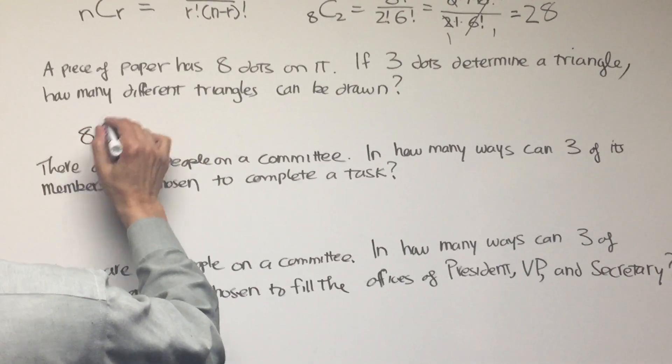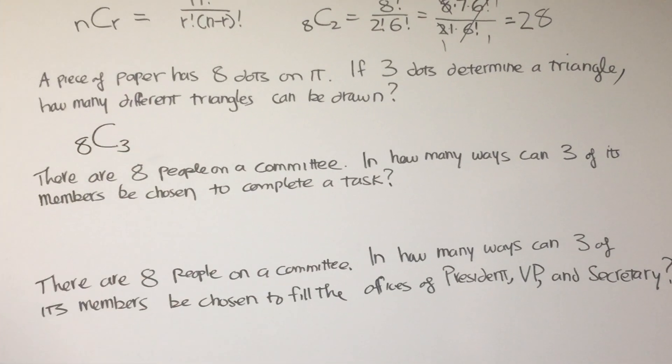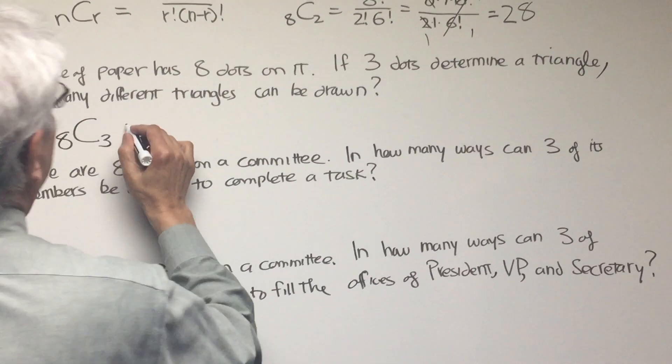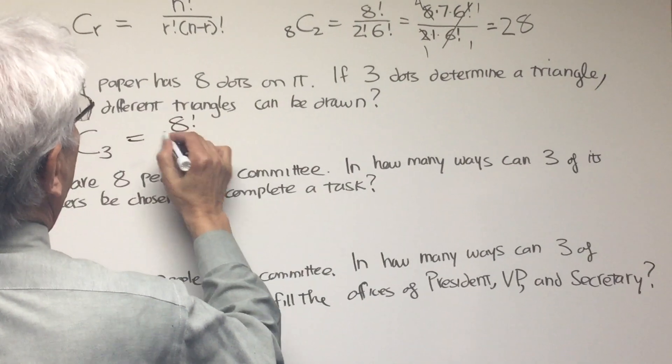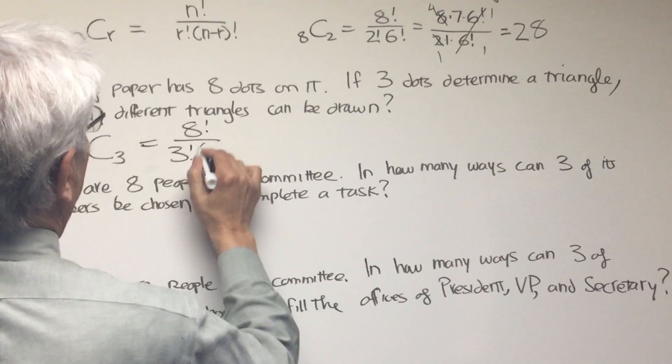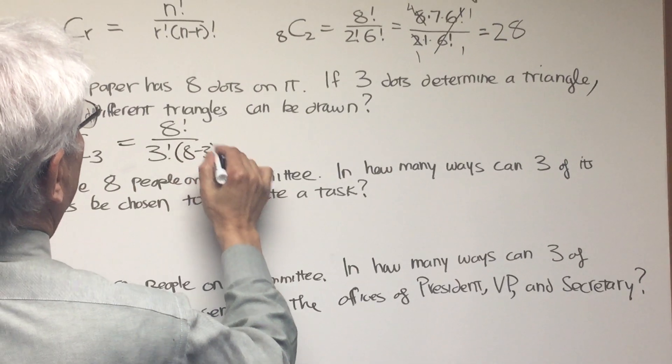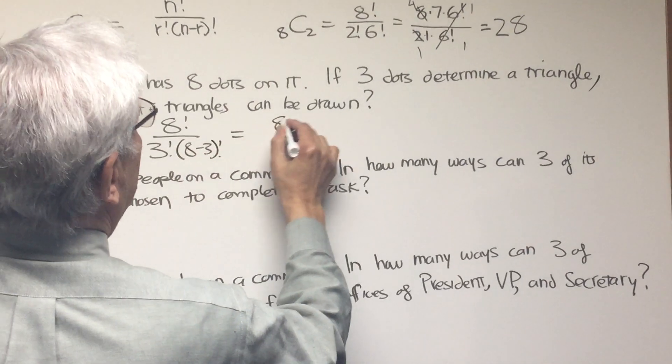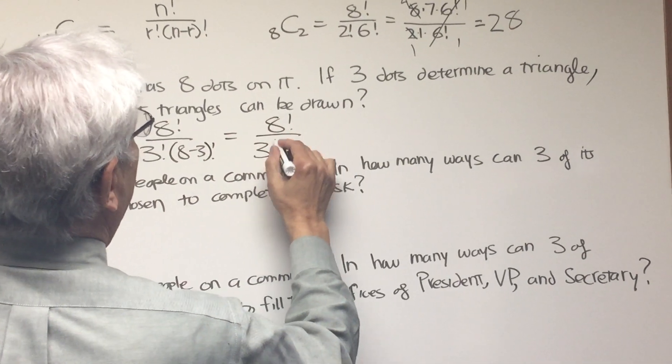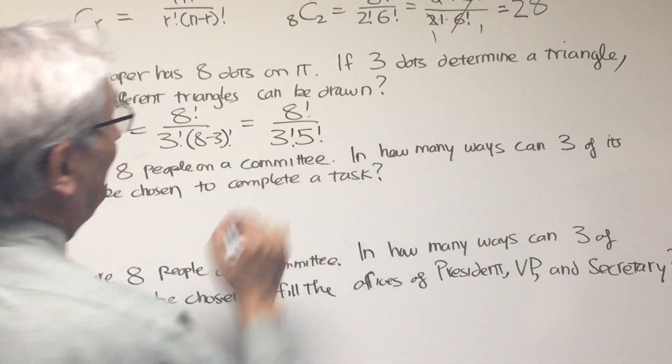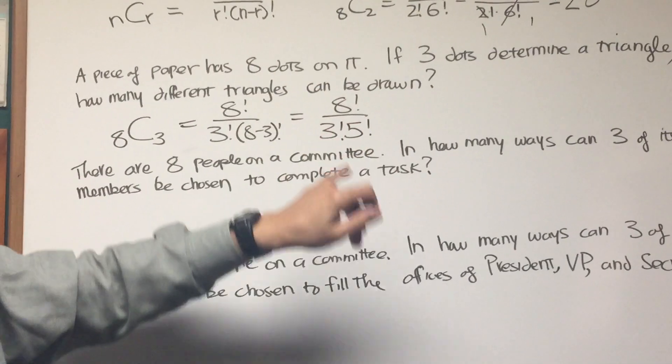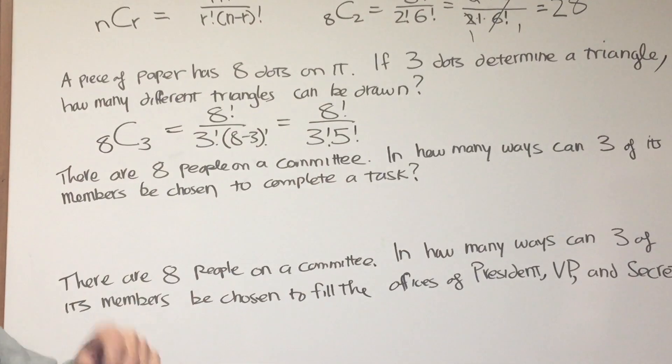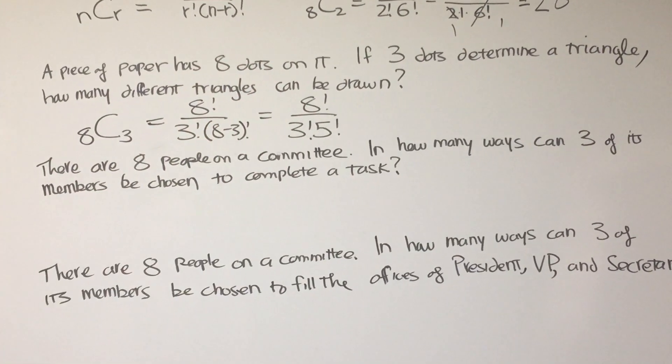Well, here we are. That's eight things taken three at a time where order doesn't count. So this is equal to eight factorial over three factorial over eight minus three factorial. So that's going to be eight factorial over three factorial times five factorial. And as always, the two numbers in the denominator, the two factorials in the denominator add up to the factorial in the numerator.